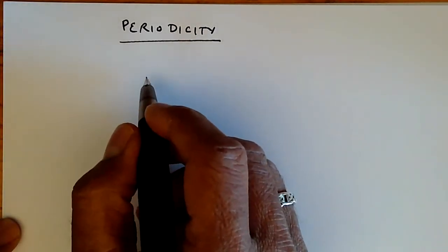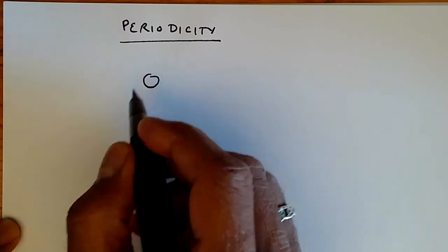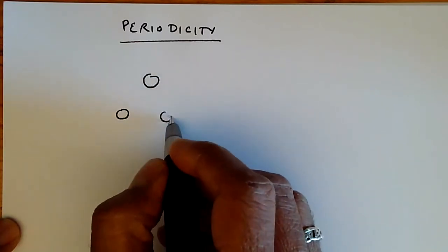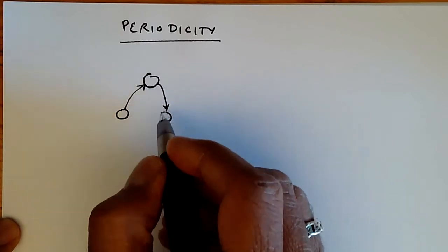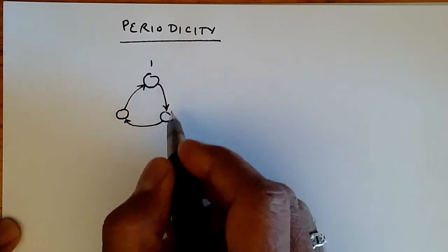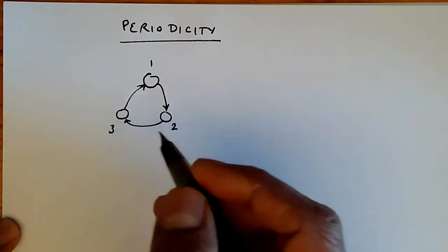Consider a Markov chain or a stochastic process in general, which has the following situation where we can go from one state to the other. For example, from state 1 to state 2 to state 3 in this fashion.